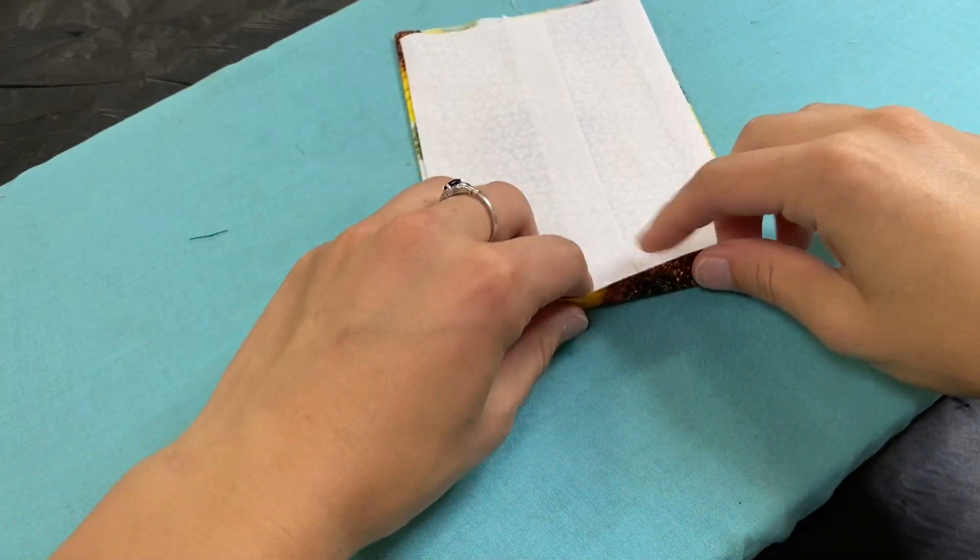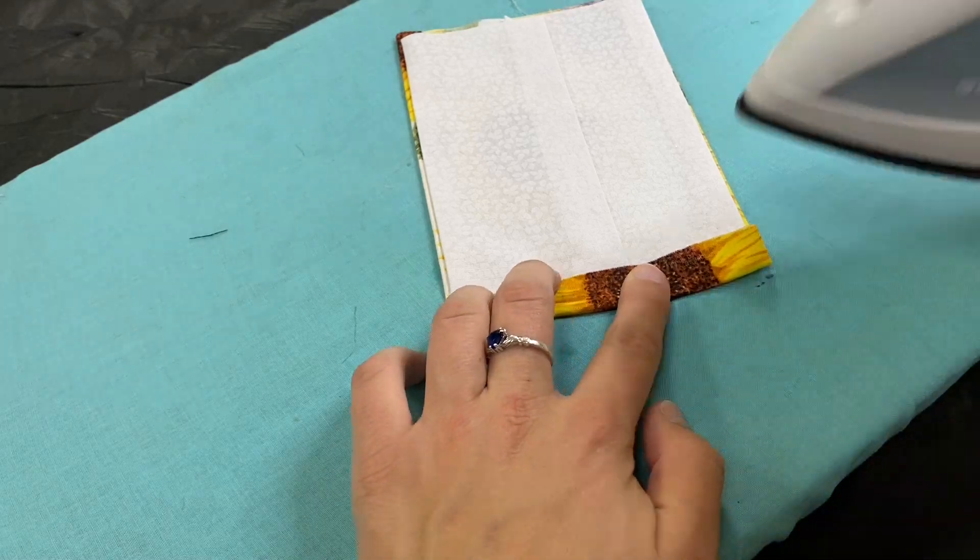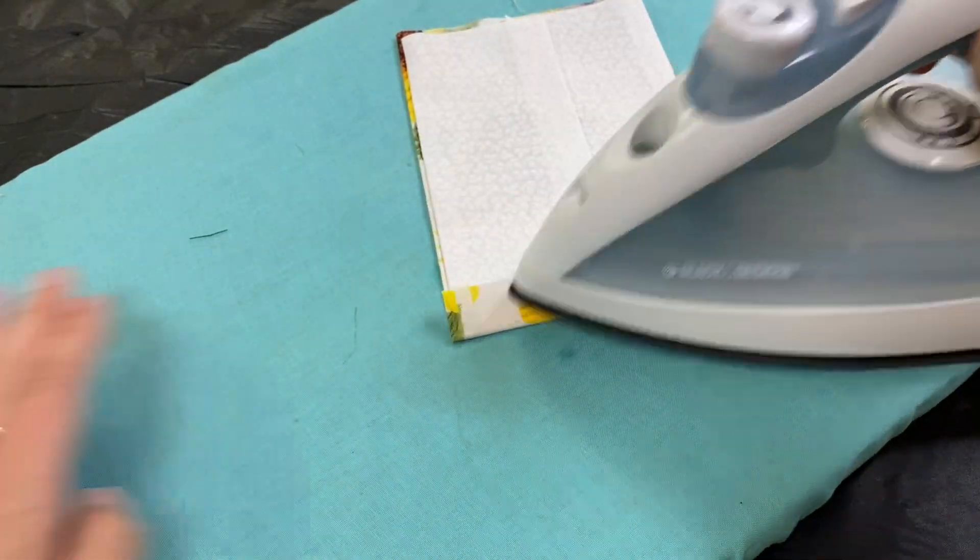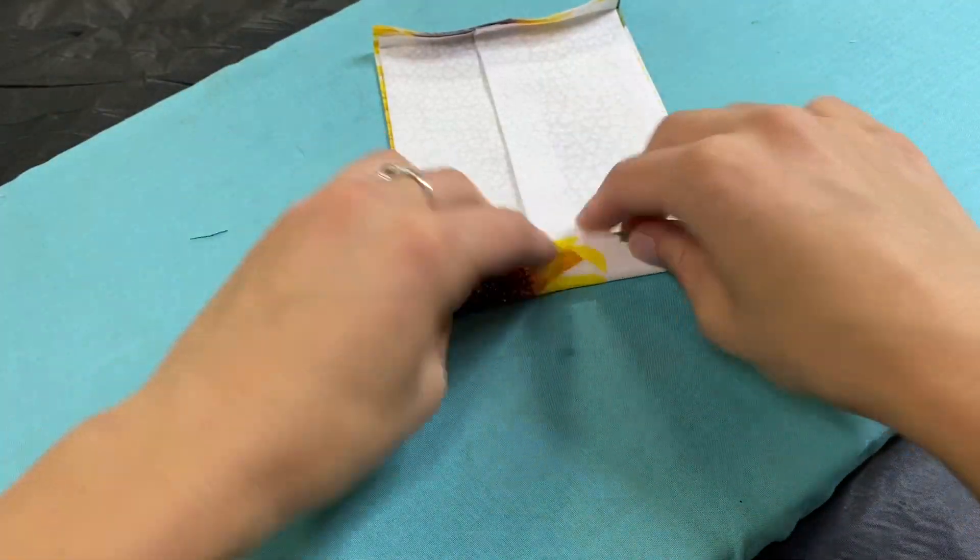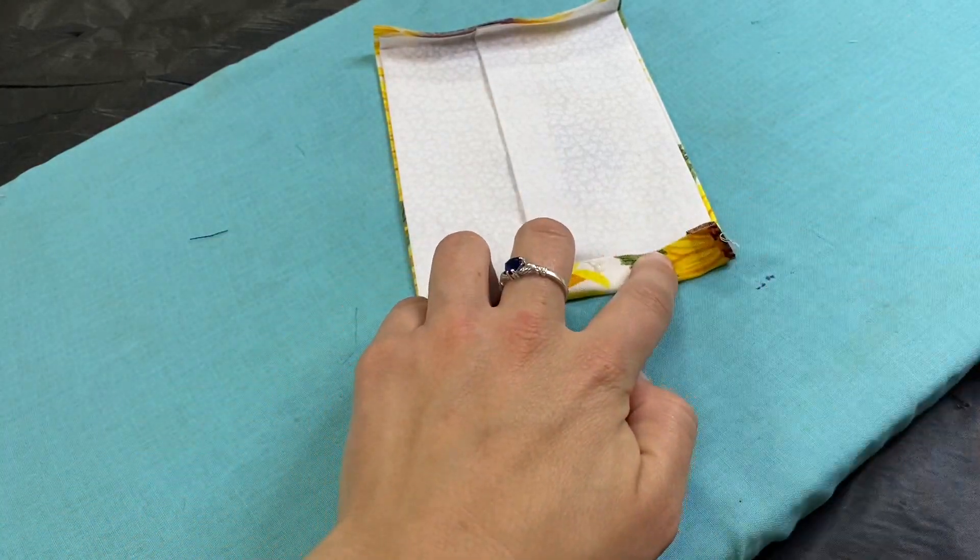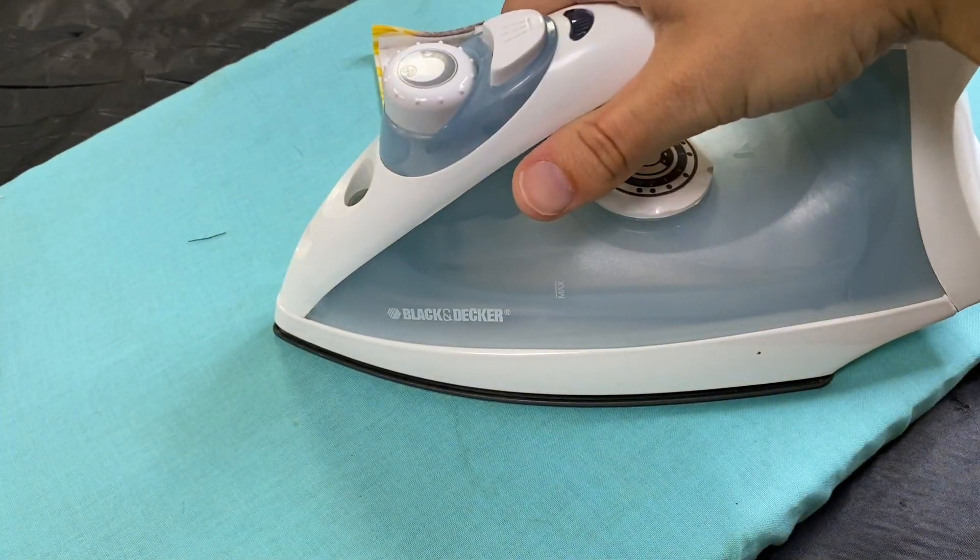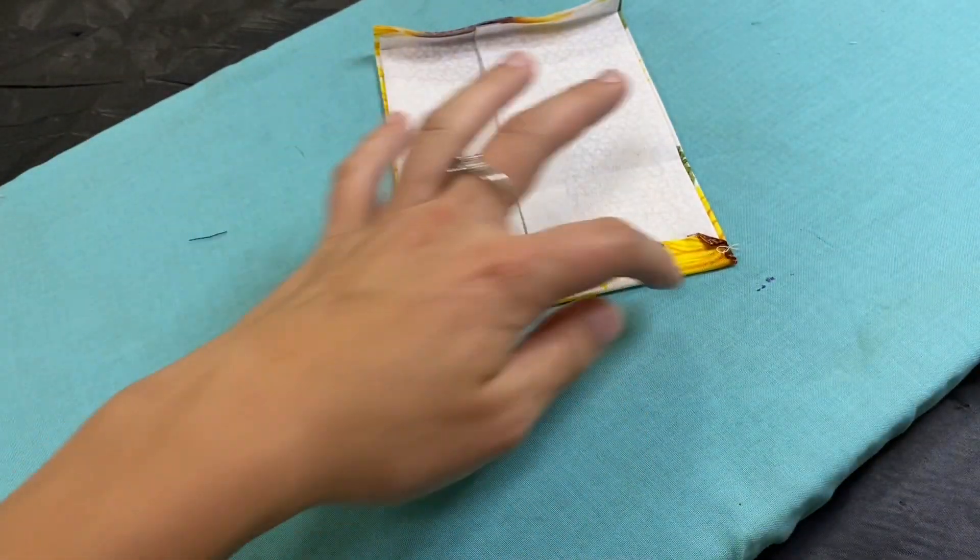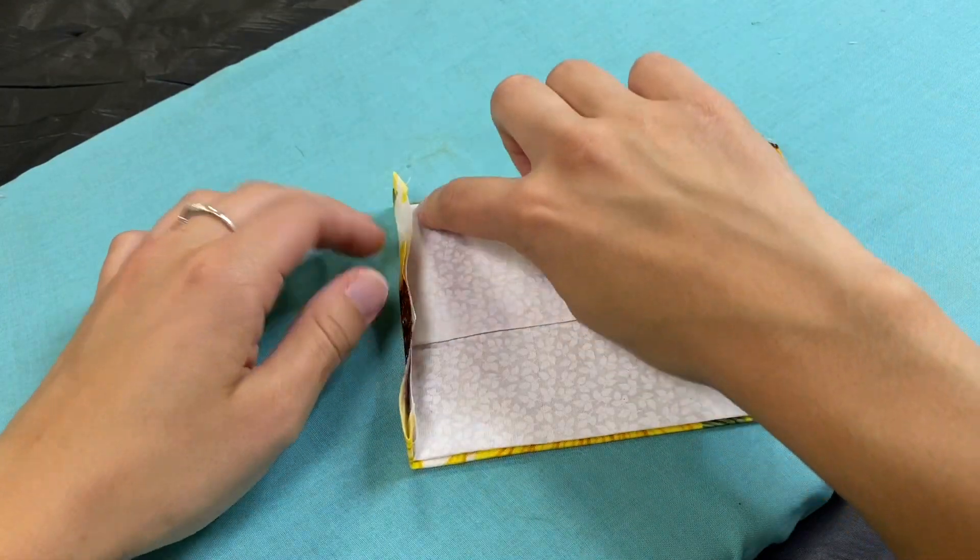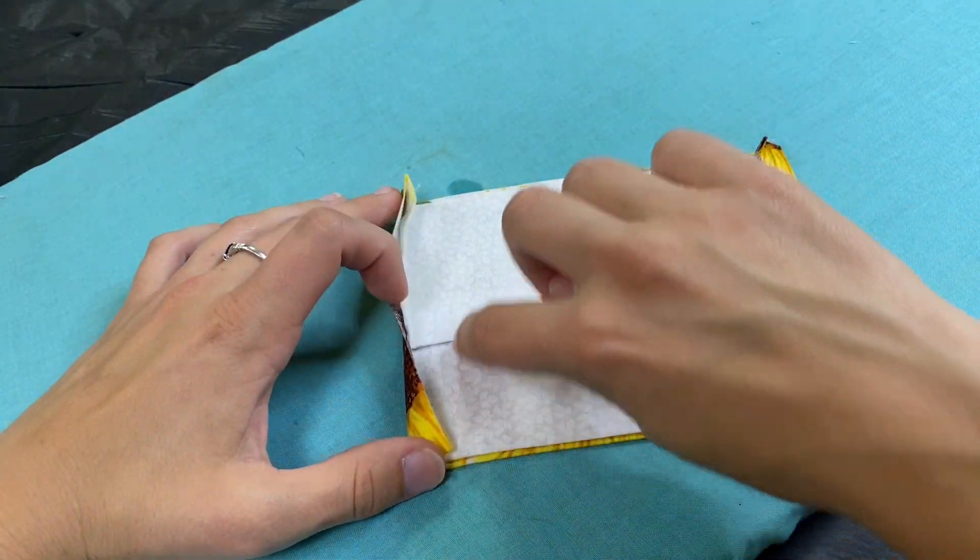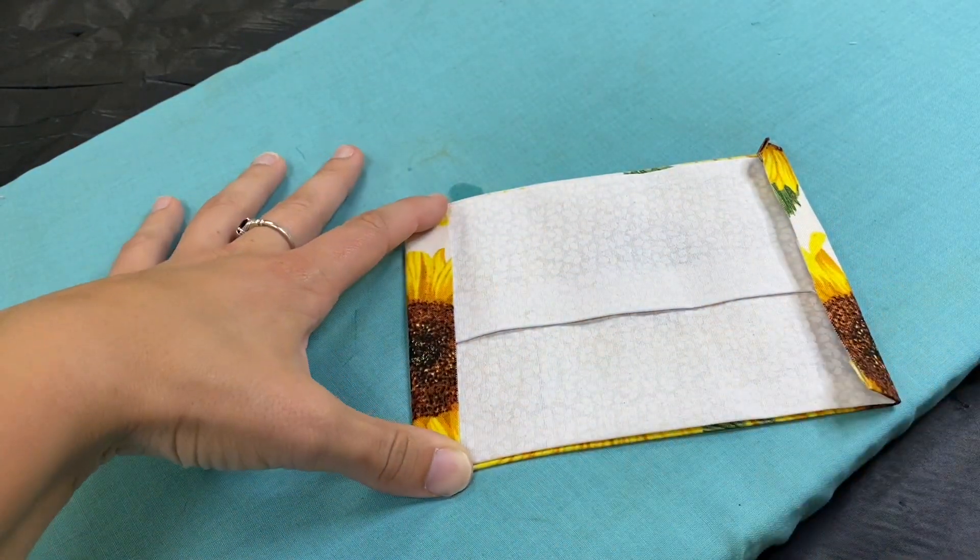All right and then next up we're going to fold each side in a little bit like this and press that. Turn around and do your other side. And you guessed it our next hot glue line is going to be right along this edge right here so I'll do a quick line like right inside and then after that I'll do another line on top just to make sure it stays put.